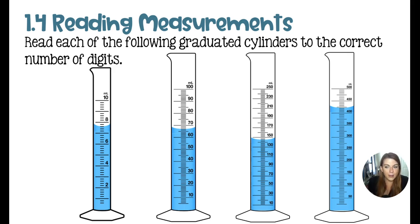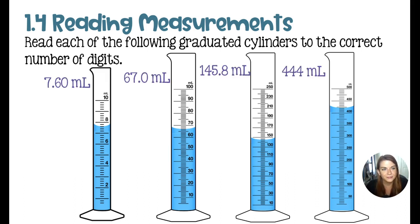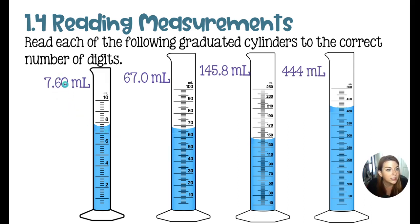Next is reading measurements. This one might be tough to read — you may want to grab a screenshot and zoom in to each of these graduated cylinders. My first graduated cylinder on the left is measuring at 7.60 milliliters. This needs two digits behind the decimal because each of these lines represents two tenths, so our tool reads to the tenths place and we estimate one space beyond, giving us 7.60 milliliters. The next two graduated cylinders read in the ones place, so I estimate one digit beyond into the tenths place — giving me 67.0 for the second and 145.8 for the third.